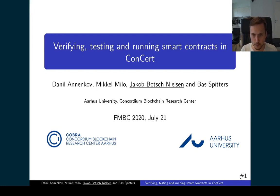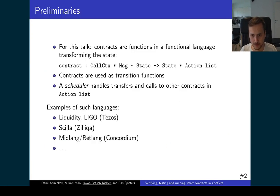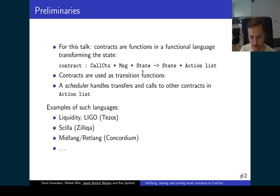In this video we present work on verifying, testing, and running smart contracts in concert. For the purpose of this talk, we consider smart contracts simply to be functions in a functional language that, when applied, transform their own state in some way. A smart contract is a function that takes information about the global environment, a message, its own local state, and as a result outputs a new local state and a list of actions to be performed, such as sending money to an address or calling an address with a message.